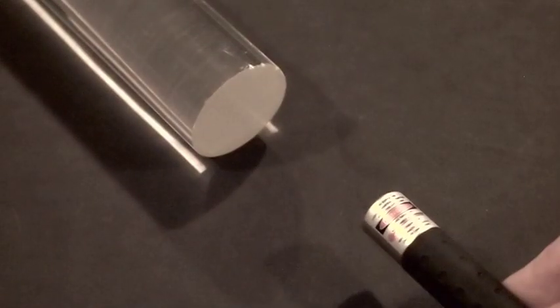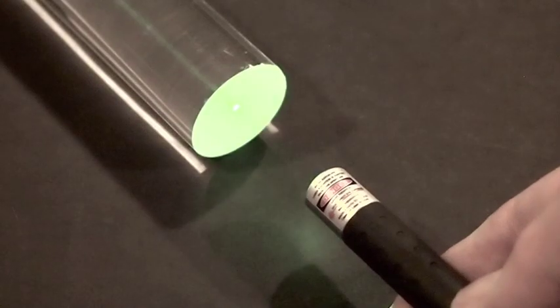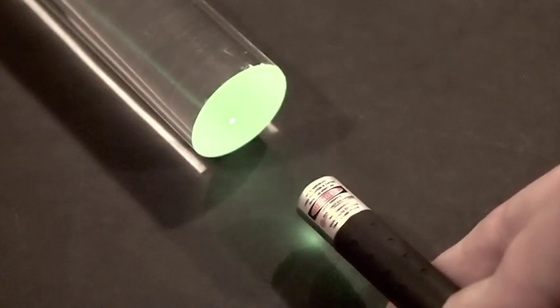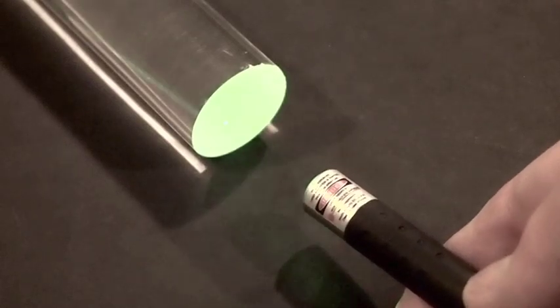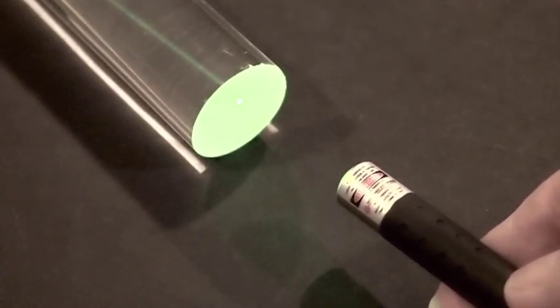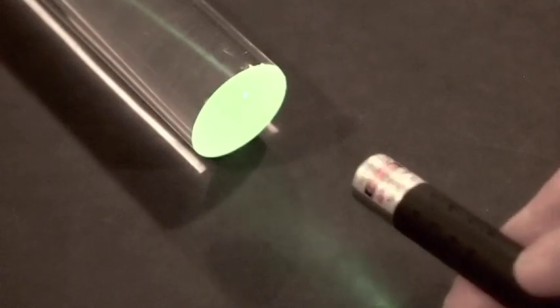For our light source, we're going to use a laser pointer. Here you can see how it is scattered by the imperfect finish on the end of the plastic rod, and how light is carried down the rod.